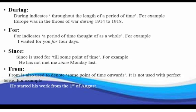From: from is used to denote some point of time onwards. It is not used with perfect tense. For example, he started his work from the 1st of August.